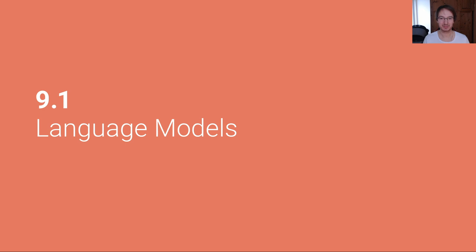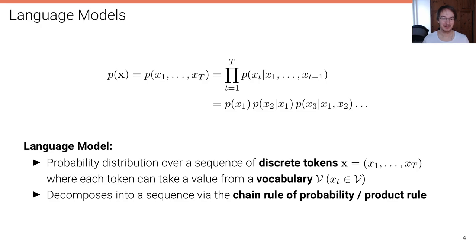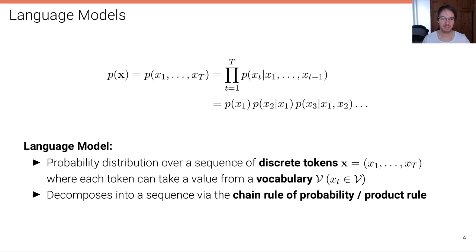So let's get started with language models. A language model models the probability distribution over a sequence of discrete tokens. These tokens could be words or characters. Each token can take a value from a vocabulary V, so we have x_t as an element of V. We have a sequence of these tokens x, with sequence length T, and assuming these are words, we have the first word, the second word, and so on until the T-th word.